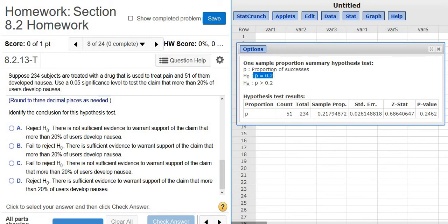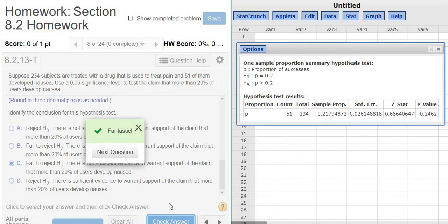When you reject H0, there is enough evidence to support that the proportion of people with nausea is greater than 0.20. If you reject H0, you have enough evidence to say HA is true. When you fail to reject H0, you do not have enough evidence. So the choice is fail to reject, and it's this one: There is not sufficient evidence to warrant support of the claim that more than 20% of users develop nausea. That's it, I hope that made sense.